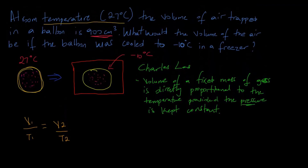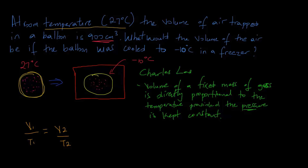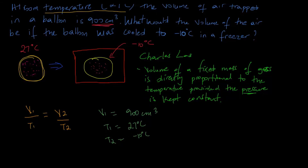Let's get some variables from the question. The initial temperature was 27 degrees Celsius and the final temperature is minus 10 degrees Celsius, and the initial volume is 900 centimeters cubed. Let's write what these variables are: V1 is equal to 900 centimeters cubed, T1 is equal to 27 degrees Celsius, and T2 is equal to minus 10 degrees Celsius. These values are not in SI units, so we need to convert the volume into meters cubed and the temperature into degrees Kelvin.